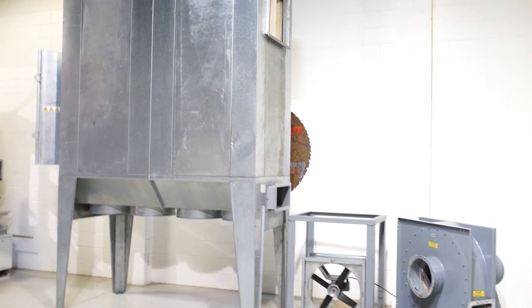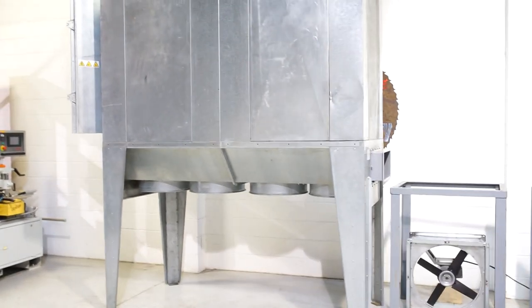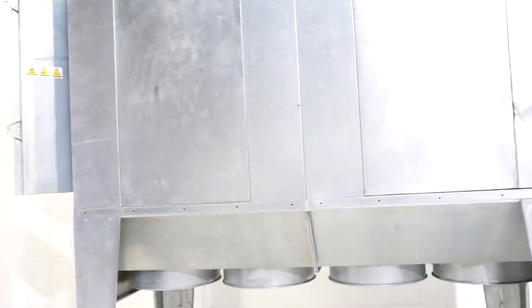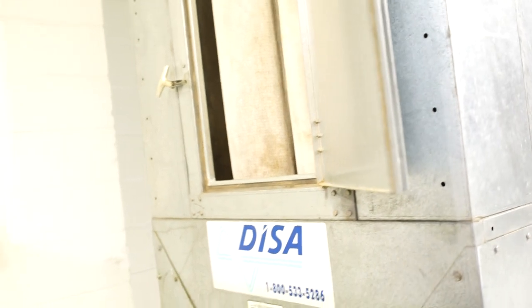The first thing you should notice is that this unit has the outdoor package, which means you get all these panels that fit between your columns and hide the bags from being exposed to the elements. The outdoor package also includes an access door to get to those filters.